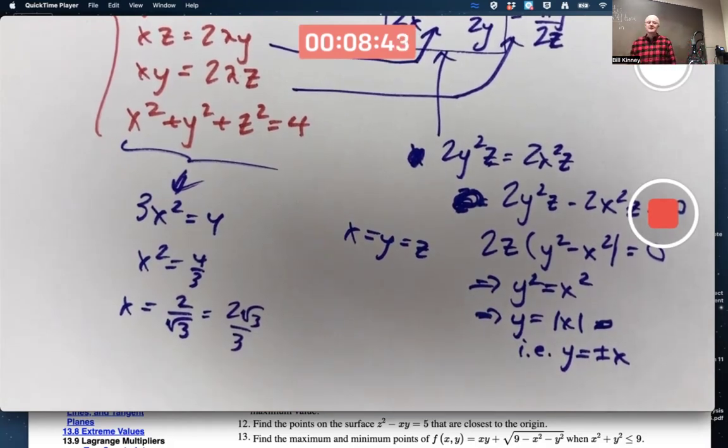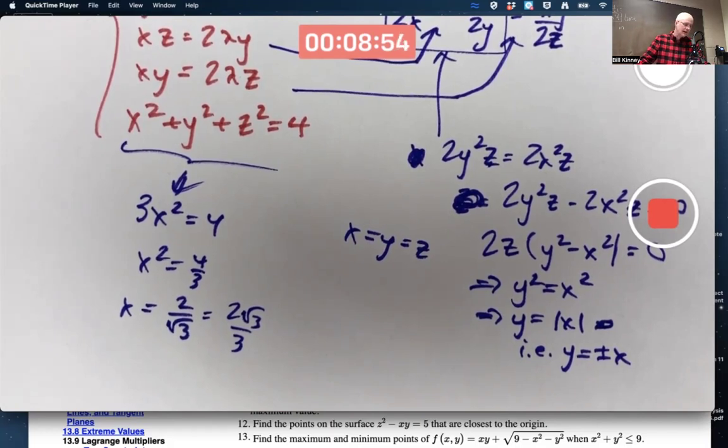Those will be the locations. The values of X, Y, and Z that will maximize V. It's not clear that it's a maximum, but evidently it will.